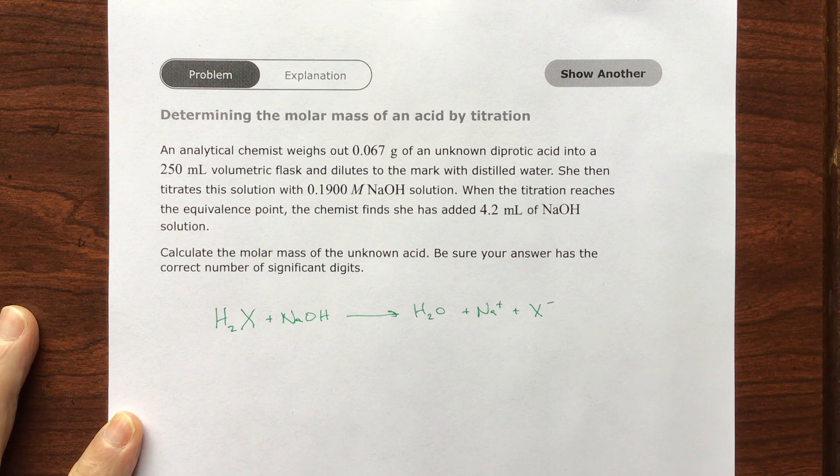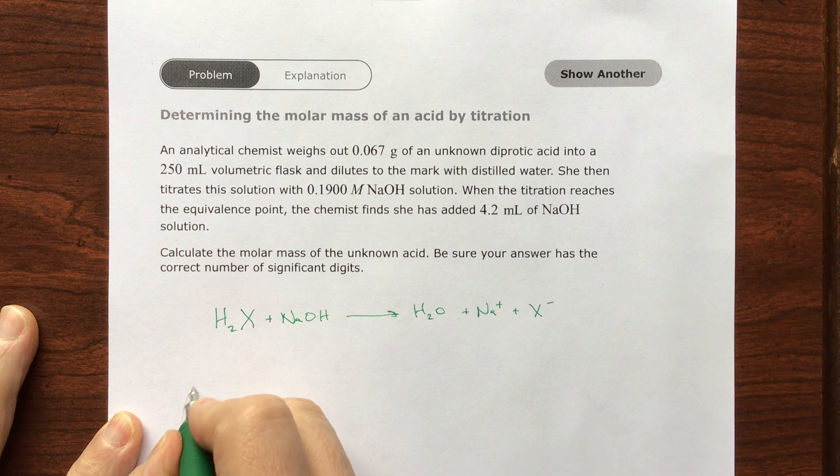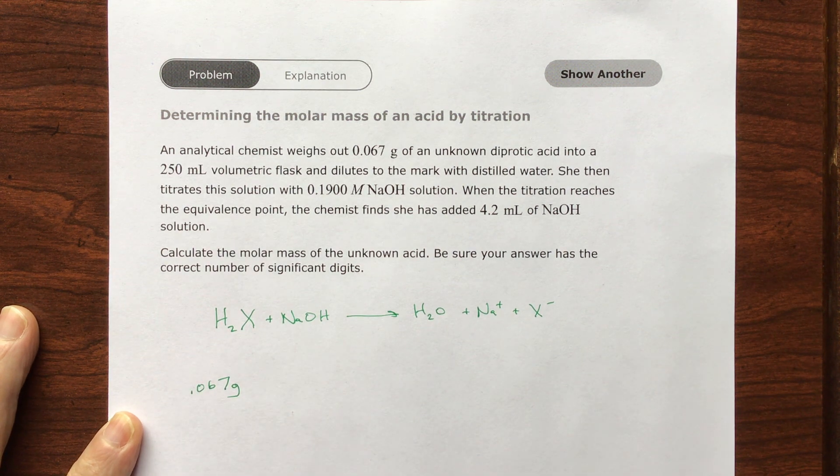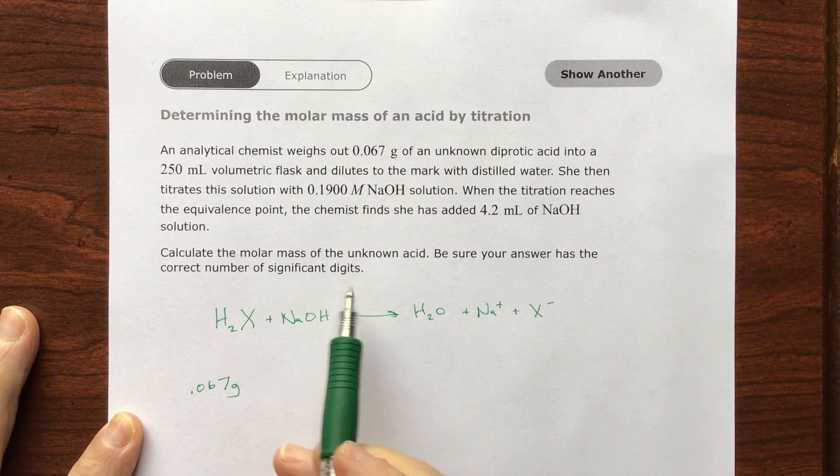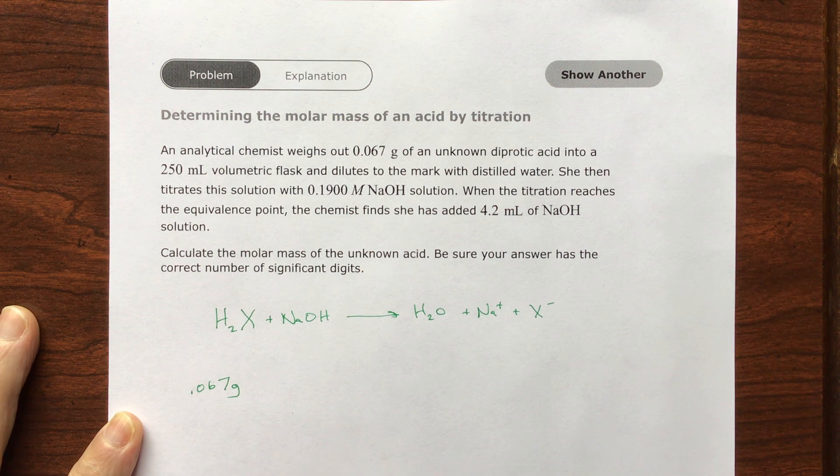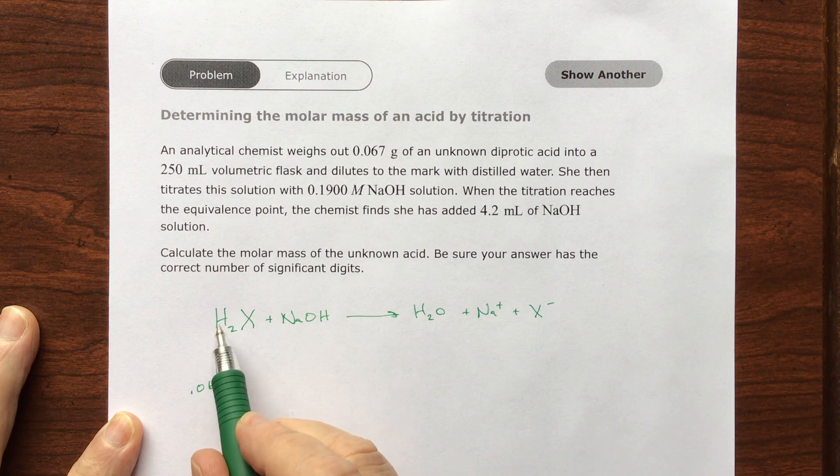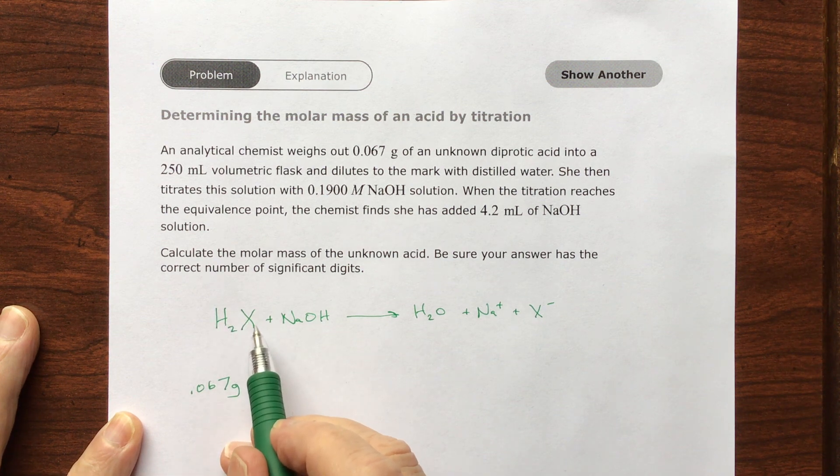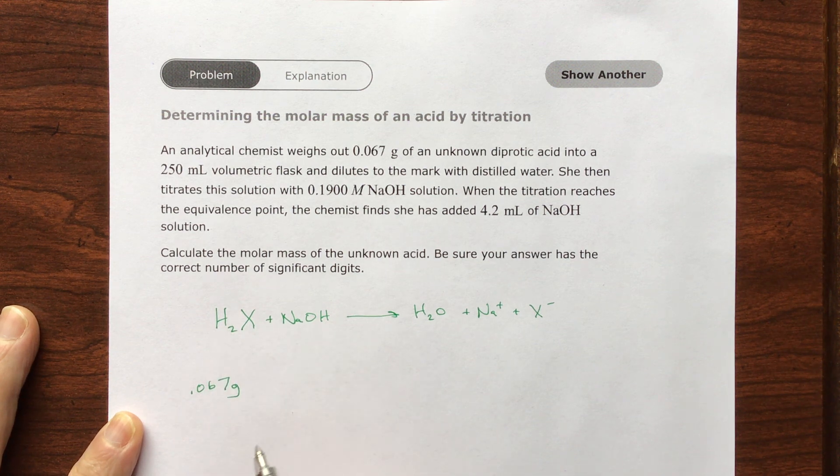Okay, so you are going to be given a certain number of grams. We have 0.067 grams of this acid. Well, I don't know what acid it is, but you're asked if you want to know the molar mass of this unknown acid. That seems really hard, but all you really have to think of is an acid is just throwing a proton. Think of it as throwing a ball, and the hydroxide is going to catch that ball.